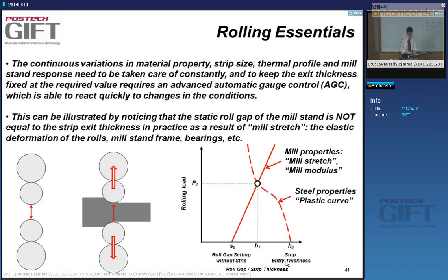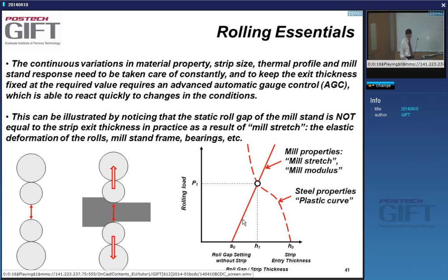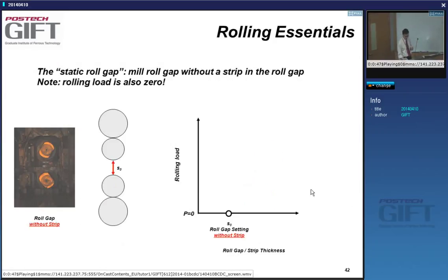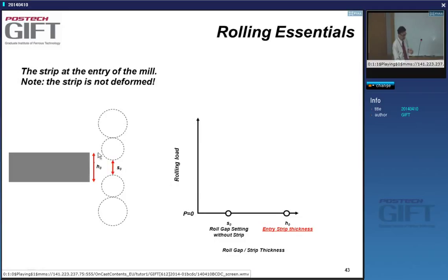We left off with rolling essentials. The working point — that is, the exit thickness of a strip and the load required for rolling — is determined by two parameters: the mill stretch and the plastic curve of the material. One is related to elastic distortion of the mill, the other to the material's response to compressive loads. You open the mill at a certain gap, and you have a material with a certain entry thickness.